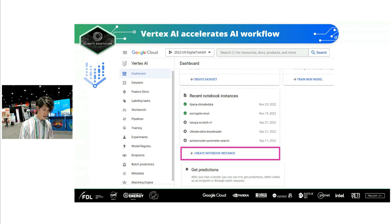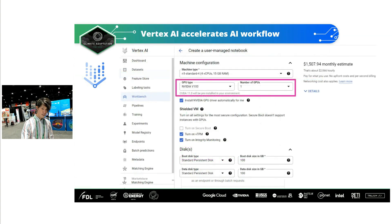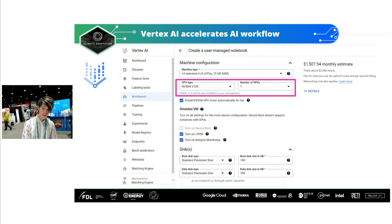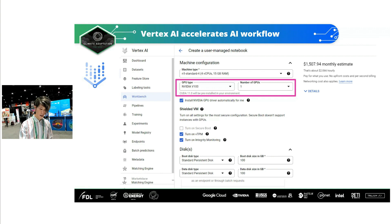Before we jump into results, let me introduce Vertex AI, the new Google Cloud application where you can train and accelerate your AI workflow much faster and more easily. You log into the managed notebook instance and a configuration interface appears. All you have to do is specify the GPU type and number of GPUs. A great feature of Vertex AI is you can monitor the monthly and hourly budget, so you don't have to worry about over-spending on computation. For geoscience, where datasets are large, you can also adjust disk size from 100 gigabytes to a couple of terabytes.